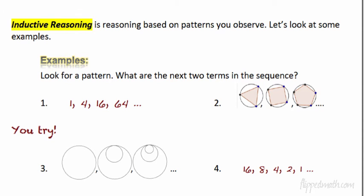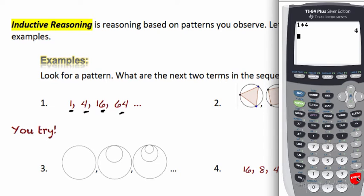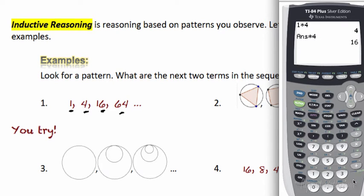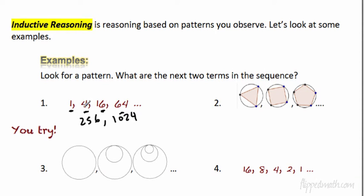Basically, you see a pattern and figure out what comes next — that's inductive reasoning. First example: 1, 4, 16, 64. I see we start at 1 and multiply by 4 each time. Using a calculator: 1 × 4 = 4, × 4 = 16, × 4 = 64, then two more times gives 256 and 1024. Those were all found by multiplying by four.